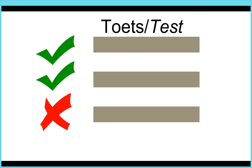Here is a quick informal test you can do to see how much you remember. On a piece of paper, write down the number and the name of the body part next to the number. At the end of the test we will have a look at your answers. Be careful with number 4 and 6.